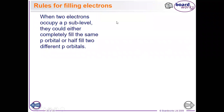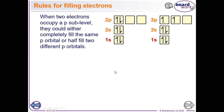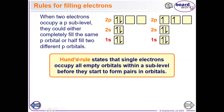Here is an important question: when two electrons occupy a sub-level, should they completely fill the same p orbital or half-fill two different p orbitals? For example, carbon has 6 electrons. For the last two electrons in the 2p sub-level, it's better to place them as single electrons in separate orbitals rather than pairing in one orbital, because that saves more energy. This is Hund's Rule, which states that single electrons occupy all empty orbitals within a sub-energy level before they start to form pairs. So pairing first is wrong; filling singly first is correct.